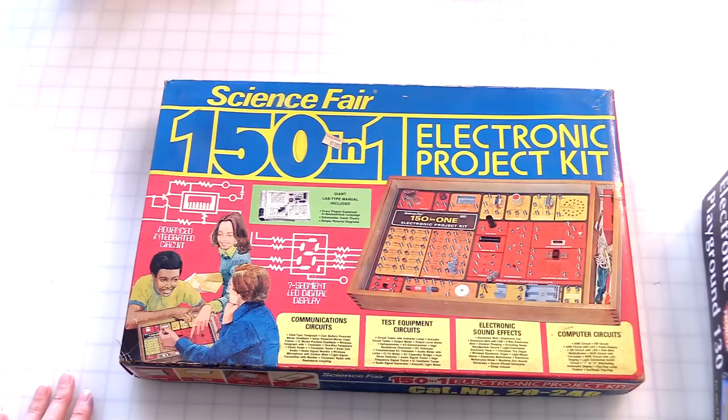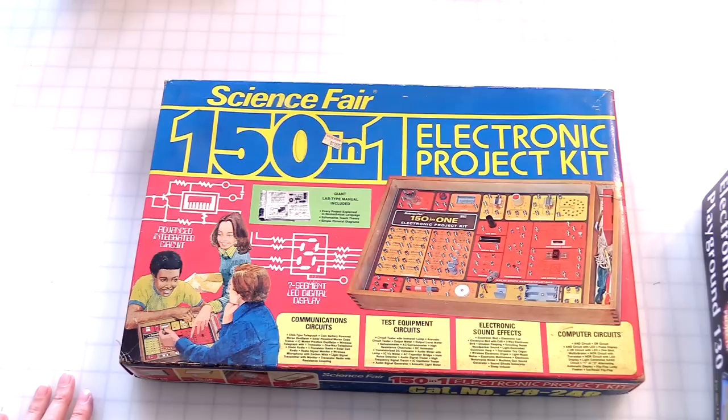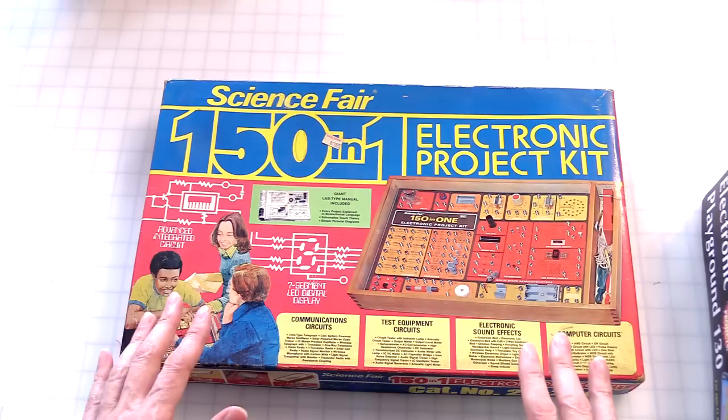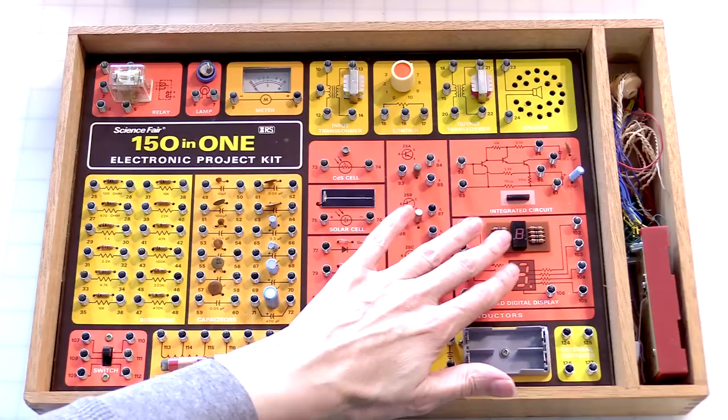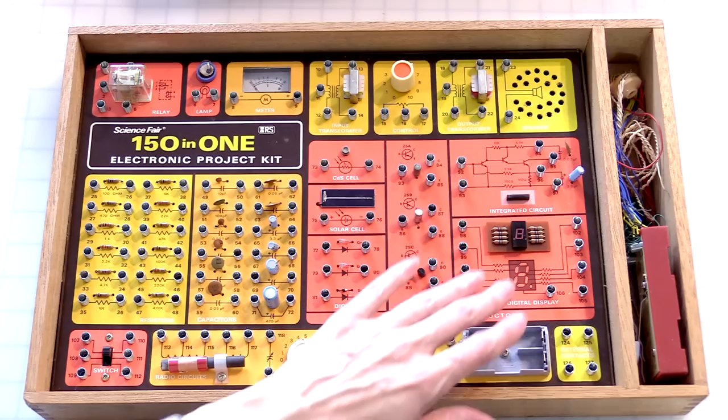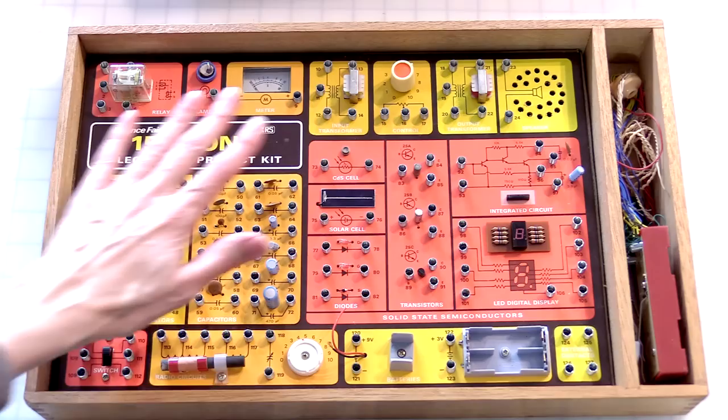But certainly a very versatile kit, the 151. They did have small ones. I think they had the 130, 101, and they had smaller versions. But this one was cool because it had this digital display, that was like totally cutting edge in '77. I remember doing so many projects where I would turn on a number. Now it doesn't have any like LED counter drivers on this.